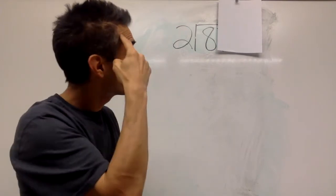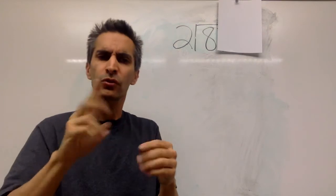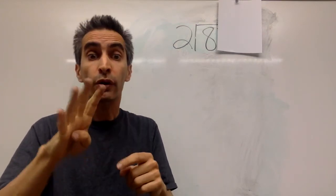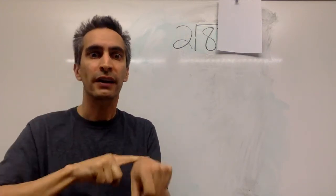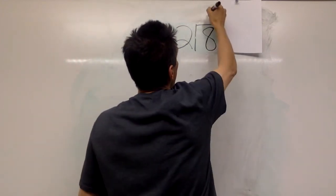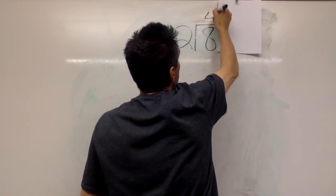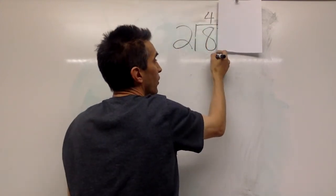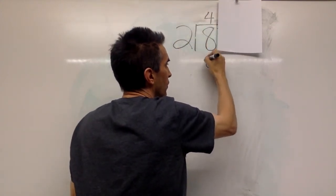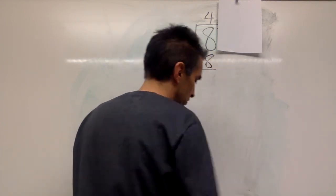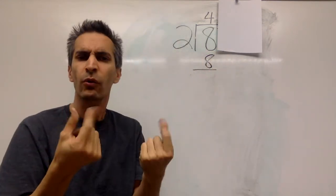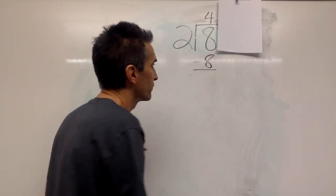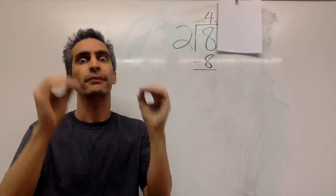Now, how do you divide? Well, you want to ask yourself: two goes into eight how many times? Let's think. Two times one equals two. Two times three equals six. Two times four equals eight — four times. So we multiply two times four and we get eight. Now, what do we do? Subtract. Eight minus eight equals zero.